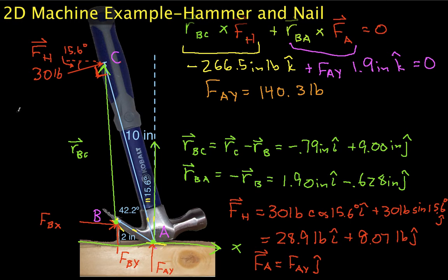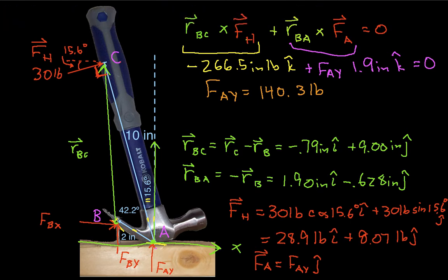In part 1, we set up the problem and then we looked at the sum of moments about point B, and used that, set the sum of moments equal to 0 because we're under a condition of static equilibrium, to discover that FAY is 140.3 pounds. So now we need to figure out what FBY and FBX are.